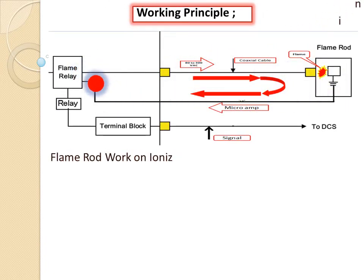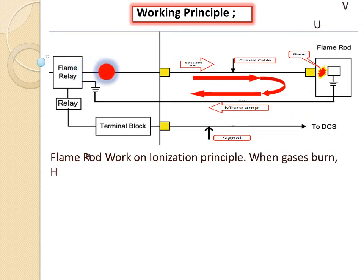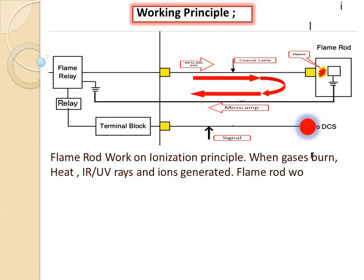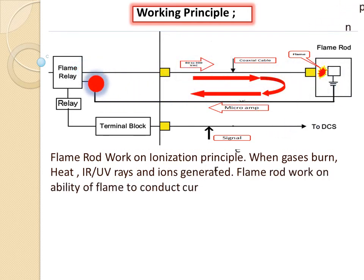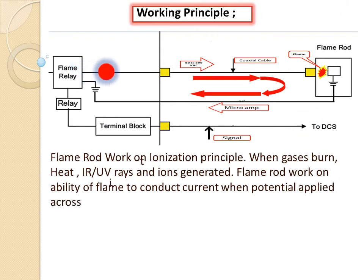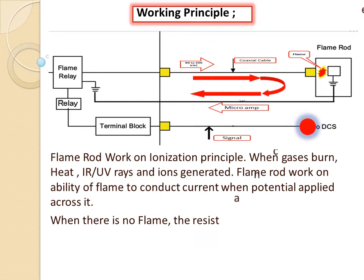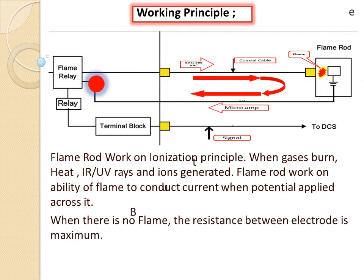Flame Rod works on the ionization principle. When gases burn, heat, infrared rays, or ultraviolet rays and ions are produced. Flame Rod works on the ability of flame to conduct current when potentials are applied across it. When there is no flame, the resistance between the electric probe is maximum, but in the presence of flame, the resistance decreases and the current flow increases, indicating the presence of flame.